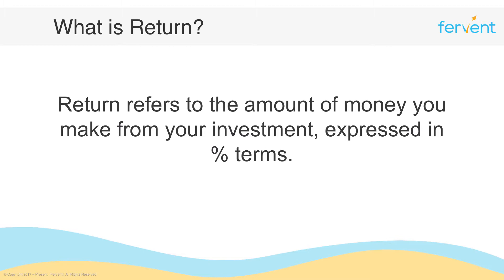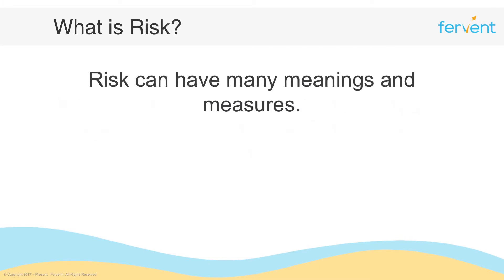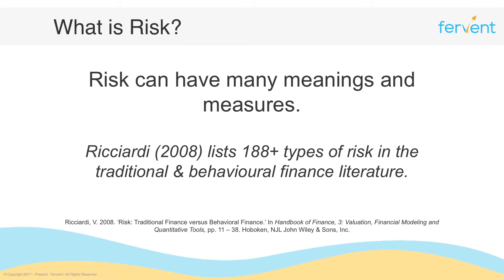Last but not least, let's talk about what risk is. Risk is an interesting one because it can have many definitions, many meanings, and a lot of measures as to how we quantify it. In an academic study back in 2008, Riccardi listed about 188 different types of risks in the traditional as well as behavioral finance literature. Of course, within these 188, a lot of them won't be generally accepted — some are new ideas being tested — but you also have your classic measures of risk which are generally accepted across the board in finance.